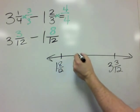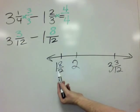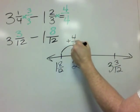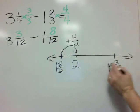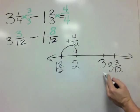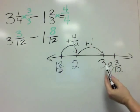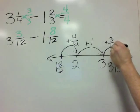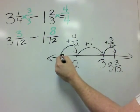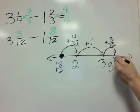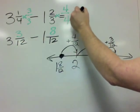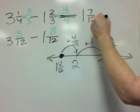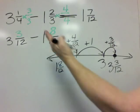Now it's easy to find the distance between 1 and 8 twelfths and 3 and 3 twelfths. This is a little bit less than 2, so we add 4 twelfths to bump 1 and 8 twelfths up to 2. Now we're at 2 — to get to 3, we add 1 whole. Then from 3 to 3 and 3 twelfths, we add 3 twelfths. So all told, to get from 1 and 8 twelfths to 3 and 3 twelfths, we add 1 whole plus 7 twelfths. That is your answer.